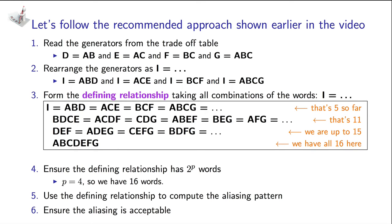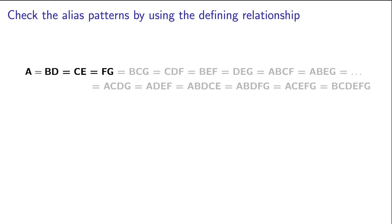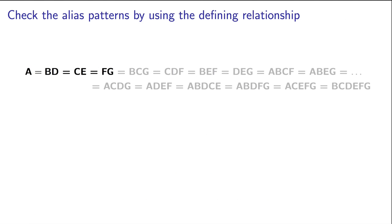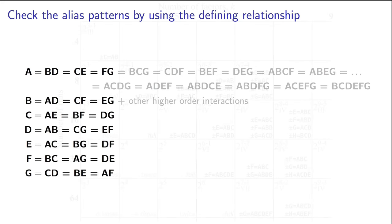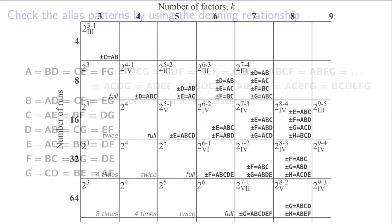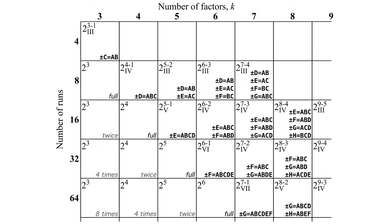Now let's go try and calculate the aliasing for factor A. If we go and do that, we get this very long expression over here. I've highlighted only the two factor interactions that are confounded with the main effect of A. I can create this list of aliases for the seven main effects in my design. This illustrates the tremendous confounding that takes place in the very dense designs at the far right-hand side of the tradeoff table.